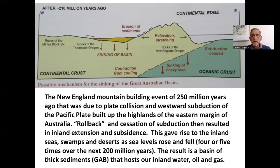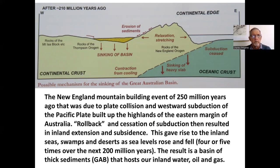The generalised picture shows that subduction had essentially ceased by 200 million years ago, and the sinking of this heavy slab probably caused stretching in the hinterland and subsidence of the various basins. That is the overall mechanism for some of those basins — the Lachlan, Bowen, et cetera — and also for the Eromanga Basin.